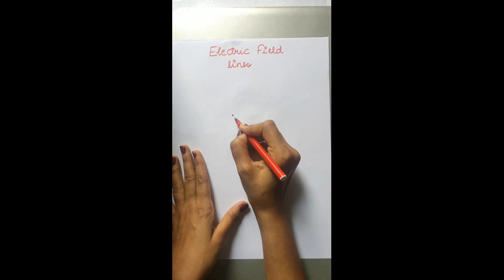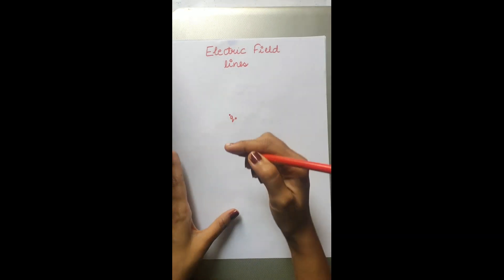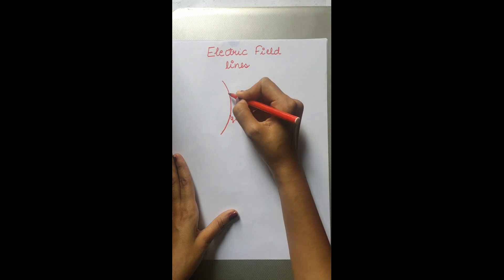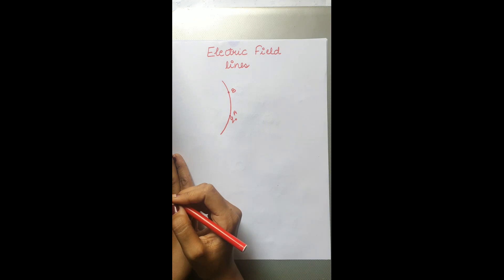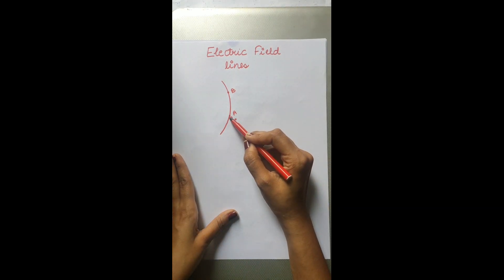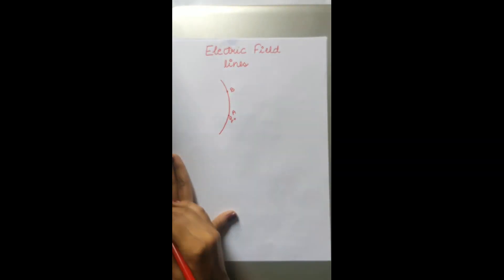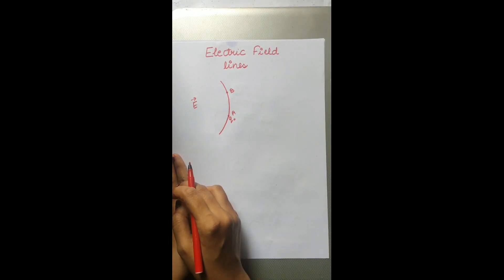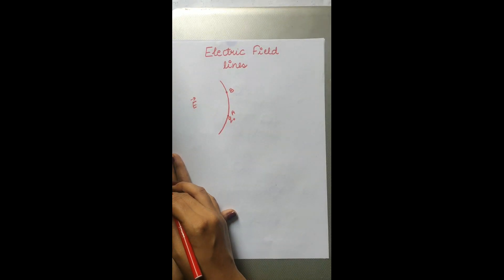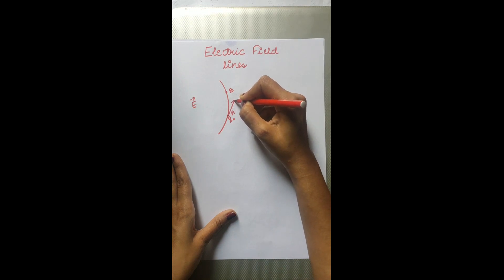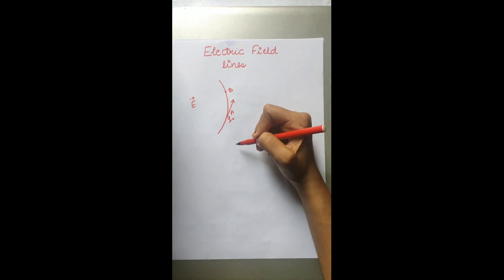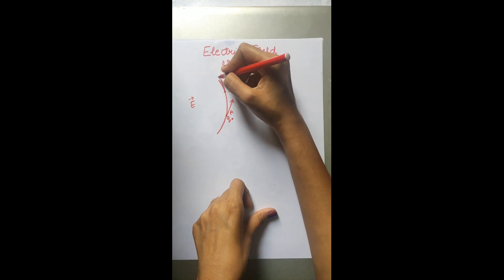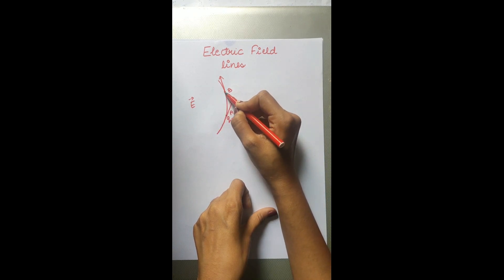Suppose we have a small positive test charge q₀. If it is free to move in an electric field, say it starts at point A, then it moves from point A to point B. This curve represents the path along which this unit positive test charge is free to move in the electric field. This curve determines the electric field line. At every point, the tangent drawn represents the direction of electric field at that point — for example, at point B, the tangent gives the direction of the electric field.